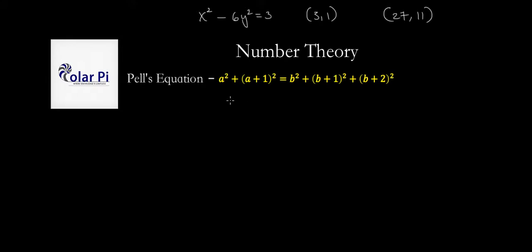But yeah, first let's talk about how this is related to solving that. Well, let's expand both on the left side and on the right side where expanding is required. Then the left side will be a² + a² + 2a + 1, and the right side will be b² + b² + 2b + 1 + b² + 4b + 4.